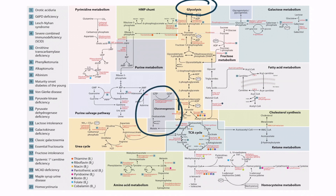Let's zoom up on the pathway. This is a detailed figure of gluconeogenesis, which can be found in section 6 of Metabolism. Notice that some of the reactions are reversible, as you can see by the bidirectional arrows, while others are irreversible. Also notice that some reactions take place in the mitochondria and others in the cytosol. Let's review the steps of the pathway.